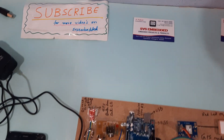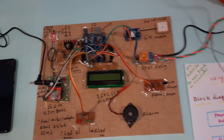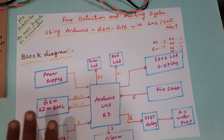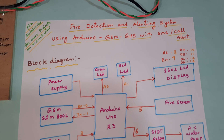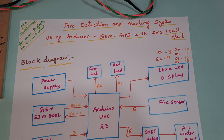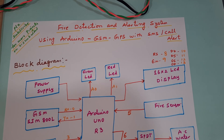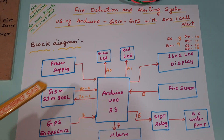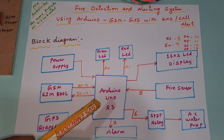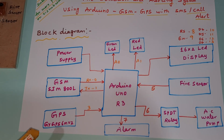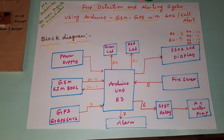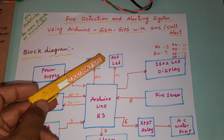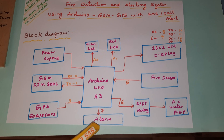Hi, we are from SVS Embedded. The project title is Fire Detection and Alerting System using Arduino GSM GPS with SMS and call alert. Here we are using a power supply module, Arduino UNO R3 board, GSM SIM 800L, GPS module, Arduino UNO R3, green LED, red LED, and alarm.